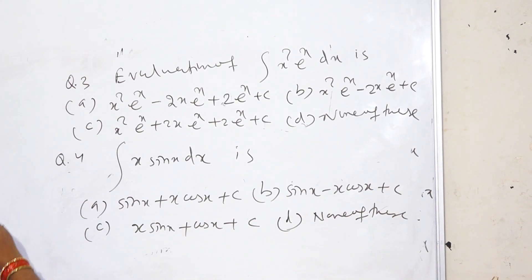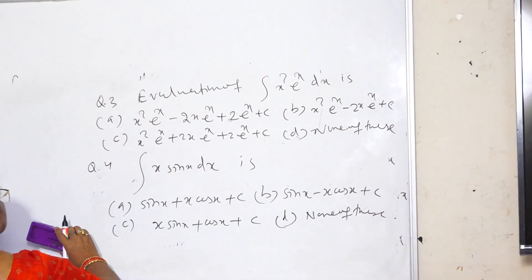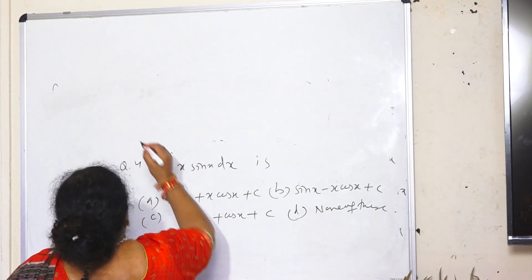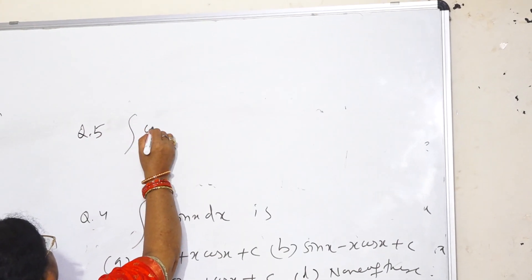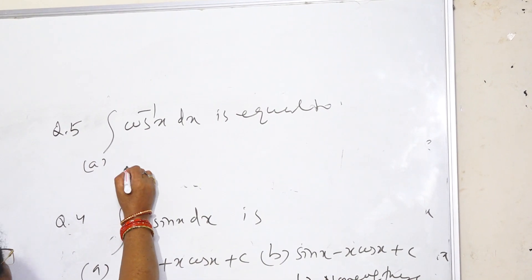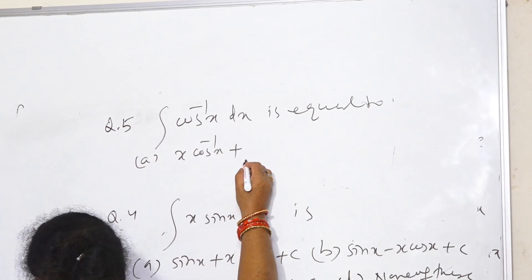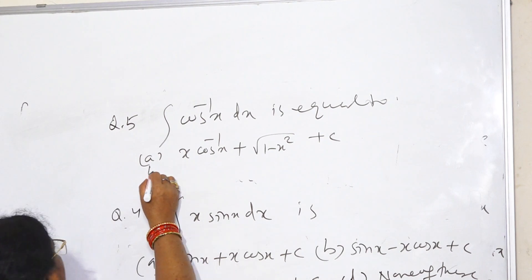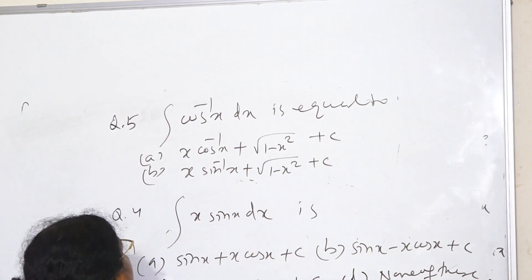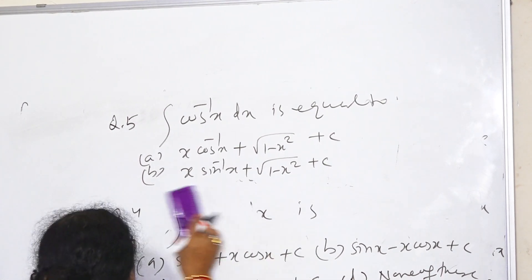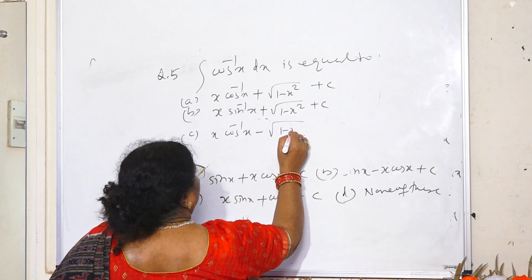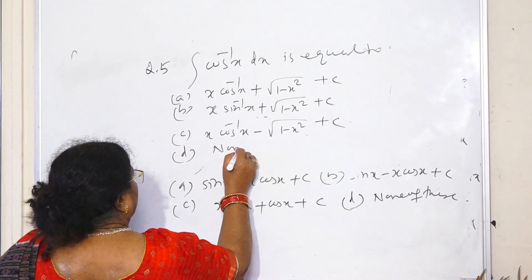Question number 5: Integral of cos⁻¹x dx equals — A: x·cos x plus root(1 minus x²) plus c. B: x·sin x plus root(1 minus x²) plus c. C: x·cos x minus root(1 minus x²) plus c. D: none of these.